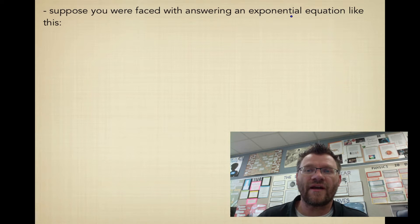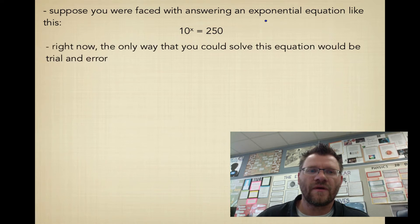So suppose you're faced with answering an exponential equation like this: 10^x = 250. Right now, the only way that you could solve this equation would be by trial and error. Because you know that 10^2 equals 100, and you know that 10^3 equals 1,000. So that means that somewhere in here, between 2 and 3 would be 250. So maybe it's 2.1, maybe it's 2.2, 2.3. Who knows? You'd have to trial and error.